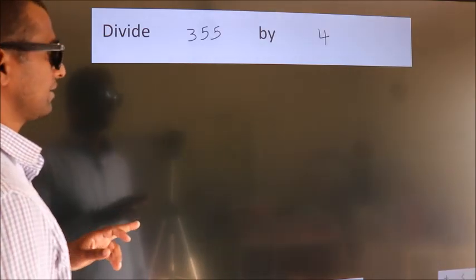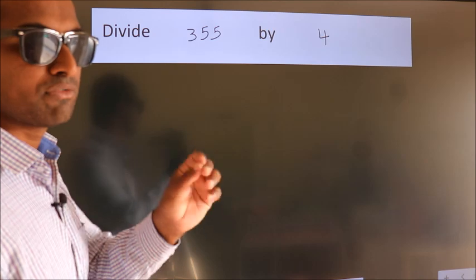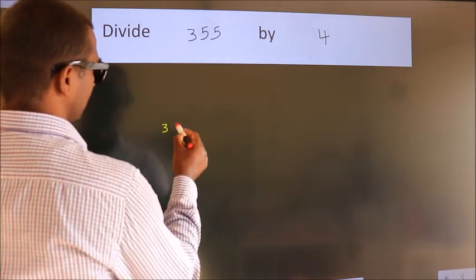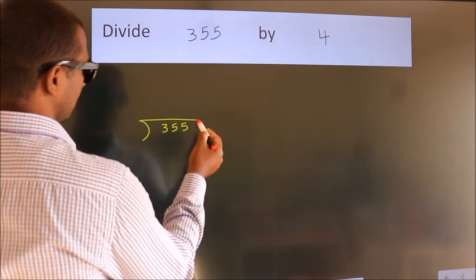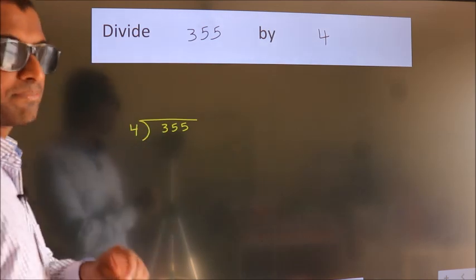Divide 355 by 4. To do this division we should frame it in this way. 355 here, 4 here. This is your step 1.